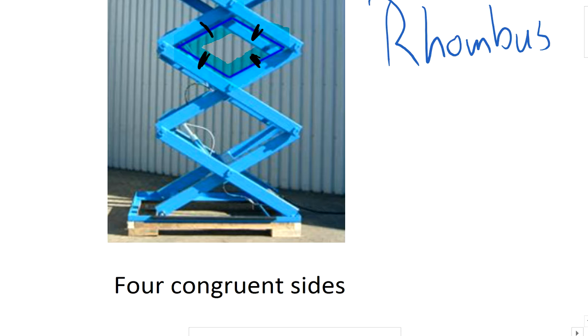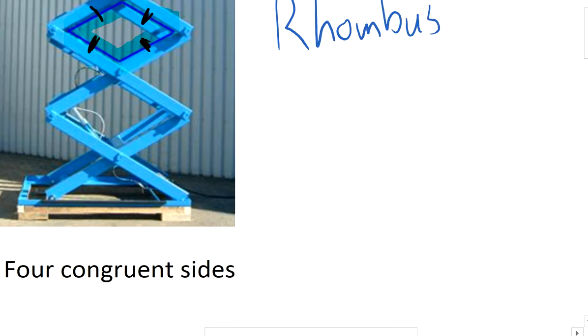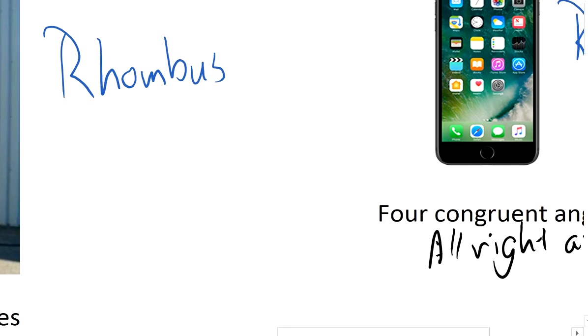Actually, let me mark them off. So this here is congruent to this one, this one, and this one. So that's a rhombus, a parallelogram with four congruent sides. Of course, it's going to inherit all of the previous properties that we just listed because it's a parallelogram, but it's going to have a little bit more, and we're going to go into that in class.